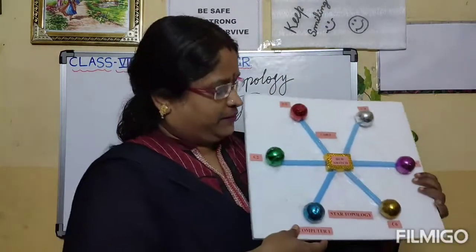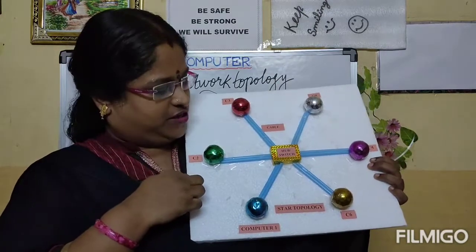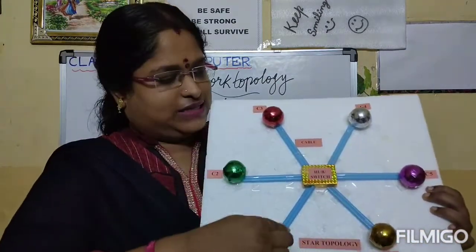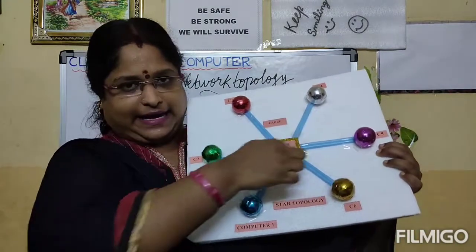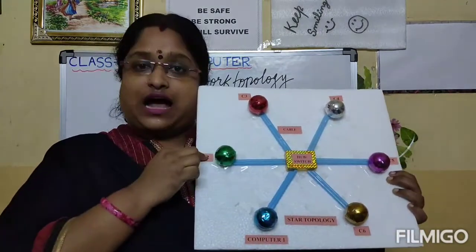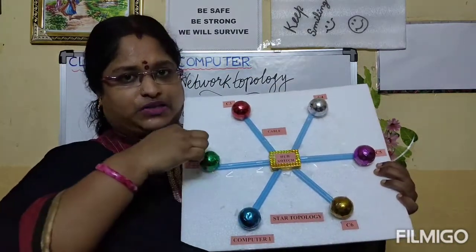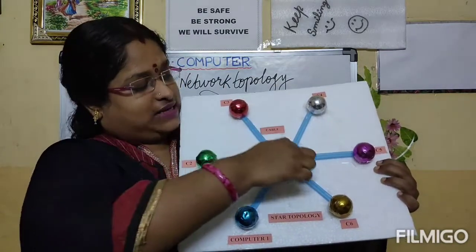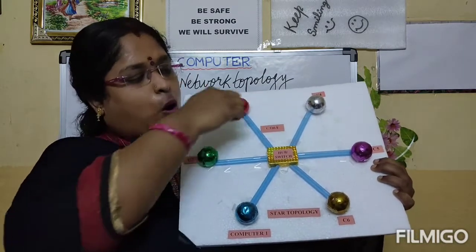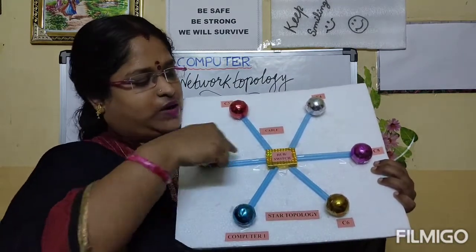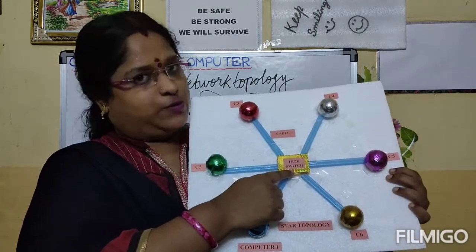I have made a simple model of star topology. Assume these balls as computers and these strings as cables. In star topology, a group of computers are connected to a central controlling device — that is, a hub or a switch.